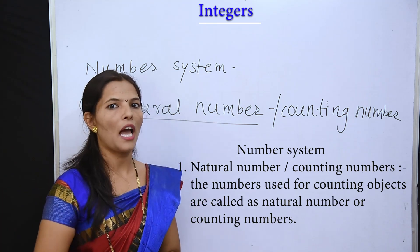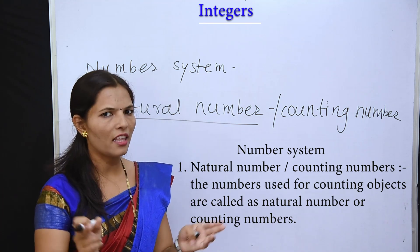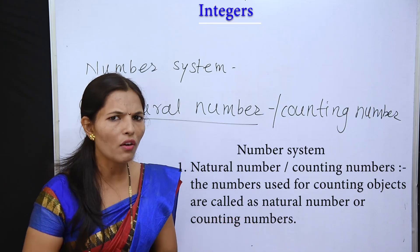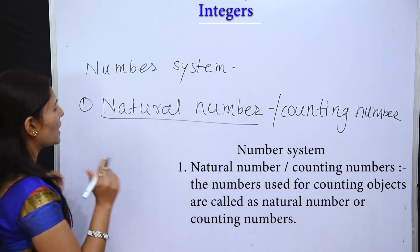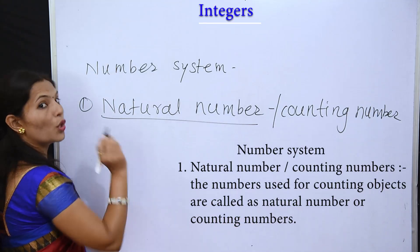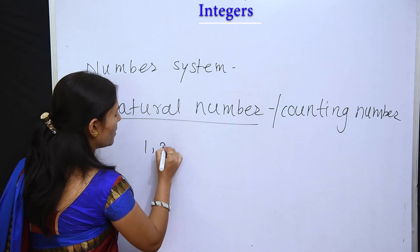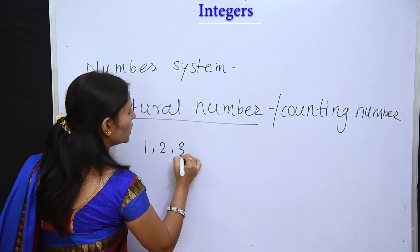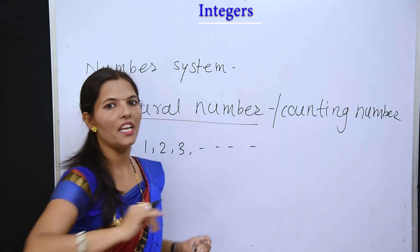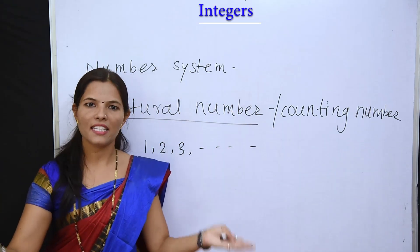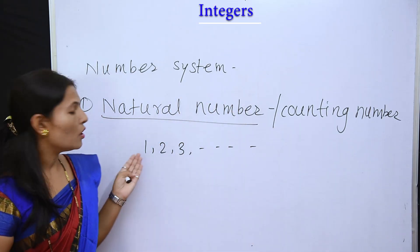There is another definition also. If you don't remember one definition you can write the other one. That is: the group of numbers 1, 2, 3 up to infinity is called as a natural number.